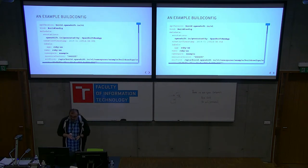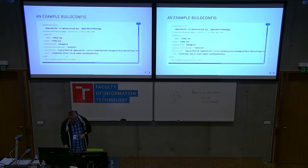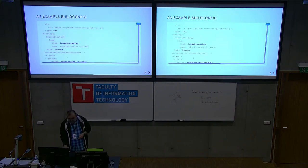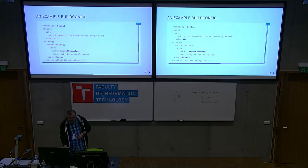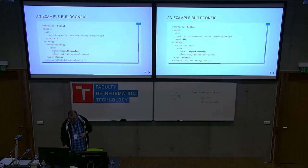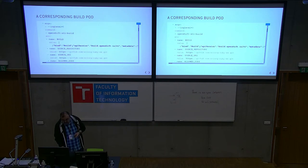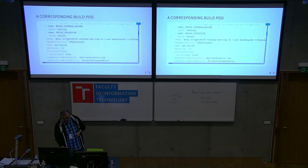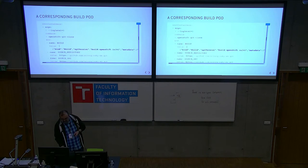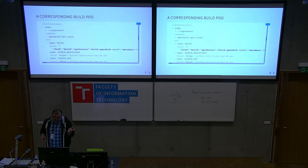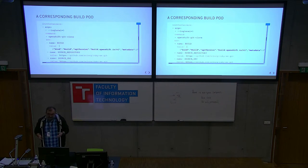Here's an example build config that was generated using one of the examples that OpenShift suggests. The interesting parts are the source code — this causes it to check out your source code — and the fact that this is a source strategy, which means it will be invoking OpenShift STI Builder. This is the build pod it produces. The important part is that it's creating one container that invokes OpenShift STI build, with some environment variables set. There's also an init container running to check out the source code for your repository. You can scroll through this at your leisure or use 'oc get -o yaml' to examine them on your own cluster.